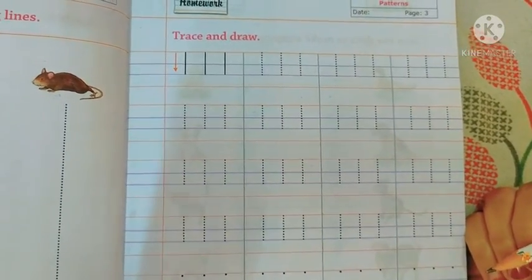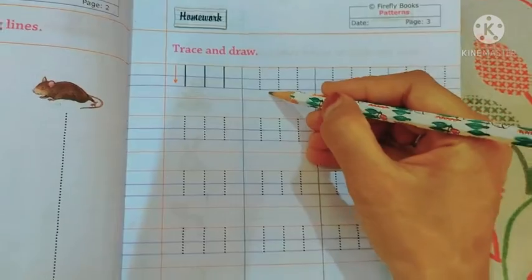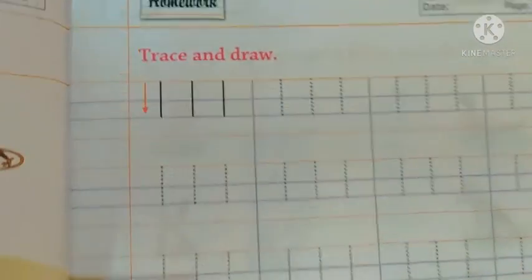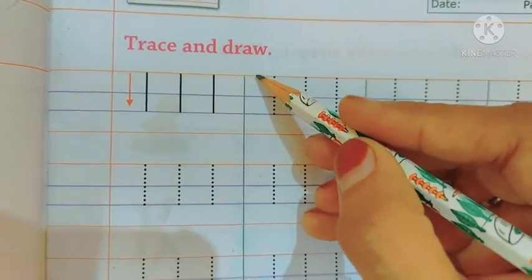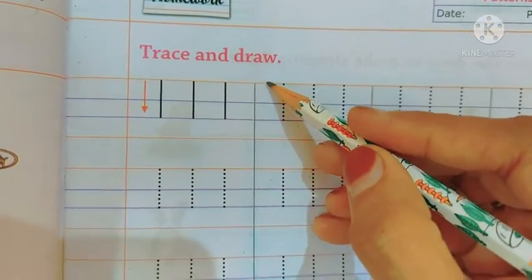Now, we will draw the standing lines on lines. Now, first we will do tracing. You can see there are 4 lines in your book.